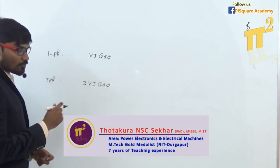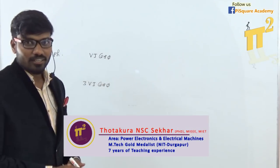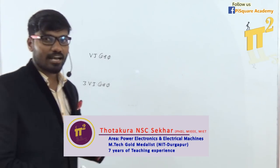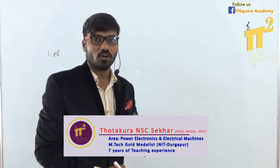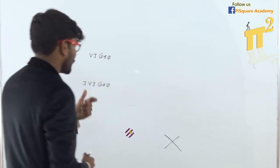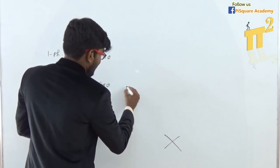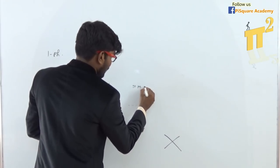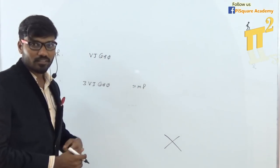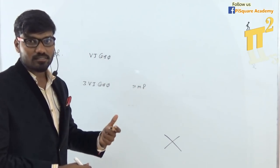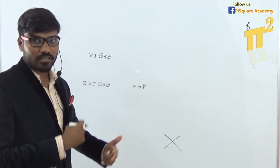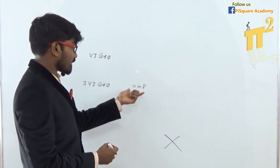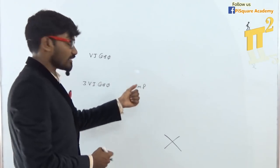So your answer normally will be: 3-phase is to transfer a high amount of power. If you have a little more knowledge on electrical, then you would say this 3-phase has a rotating magnetic field, which helps AC motors to start on their own — self-starting. Self-starting feasibility is there for 3-phase.